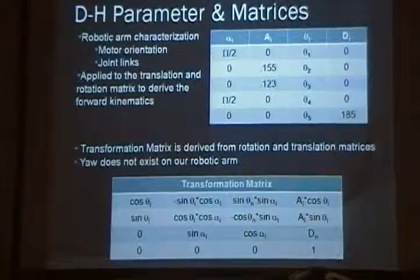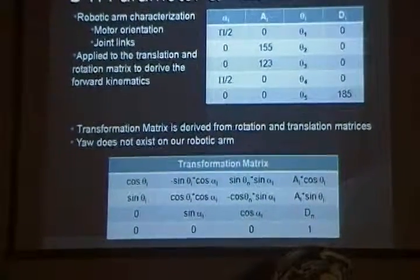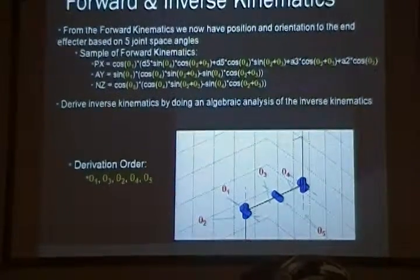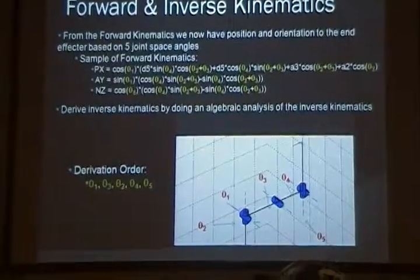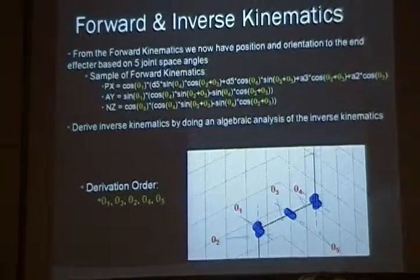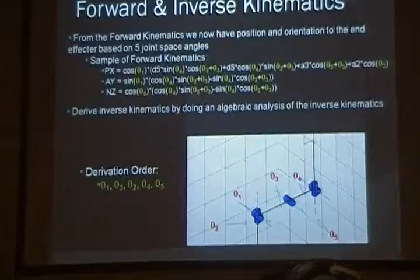However, the yaw does not exist on a robotic arm due to the fact that we're using five degrees of freedom. From the forward kinematics, we now have position and orientation in a form of our five degrees of freedom. A sample of our forward kinematics are px, py, and pz.